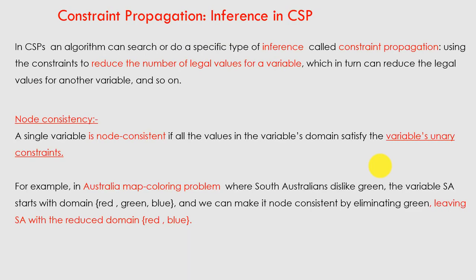Today we are going to talk about constraint propagation — inference in CSP. Inference means some kind of conclusion or decision. In CSP, an algorithm can perform a specific type of inference called constraint propagation: using constraints to reduce the number of legal values of a variable, which in turn can reduce the legal values for another variable, and so on.